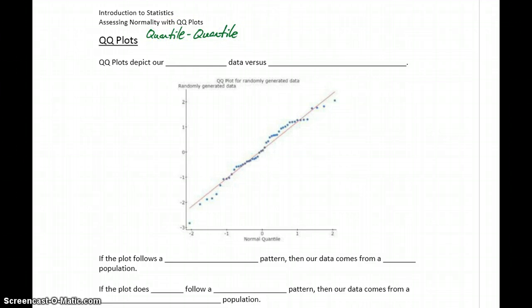So we just shorten that to QQ plot. What a QQ plot does is depicts our actual sample data versus the theoretical normal quantiles. So what that means is it's depicting our sample data versus what our sample data should look like if it was coming from a perfectly normal distribution.